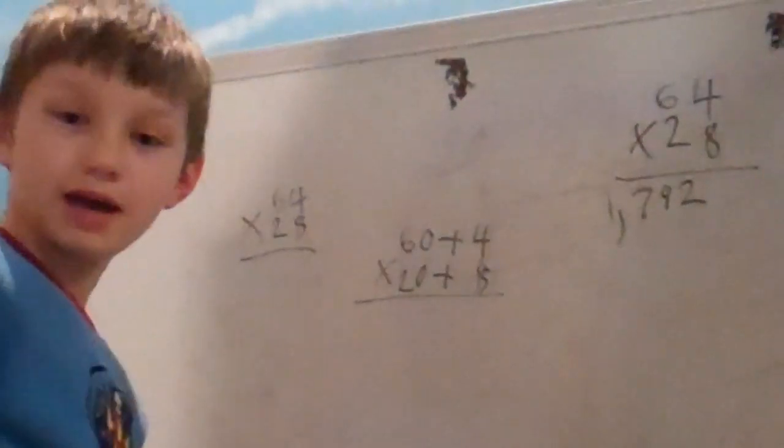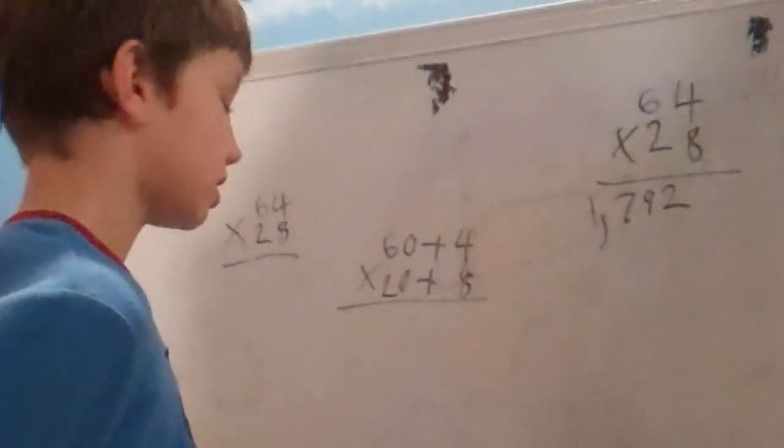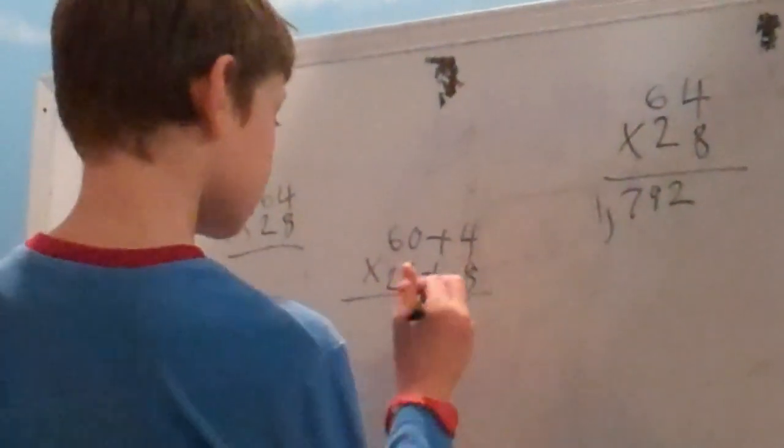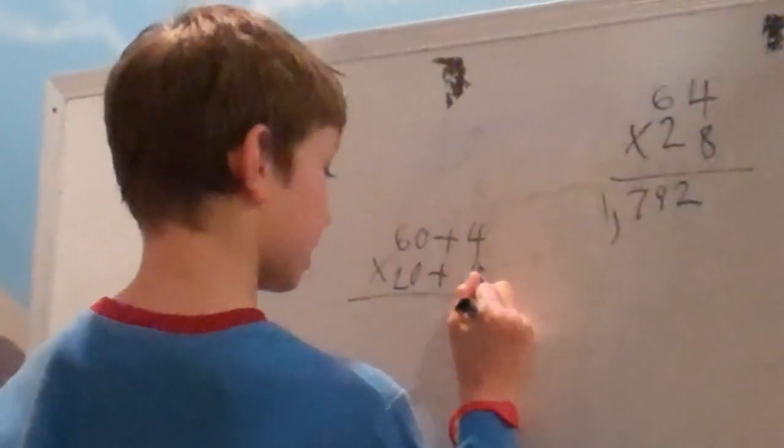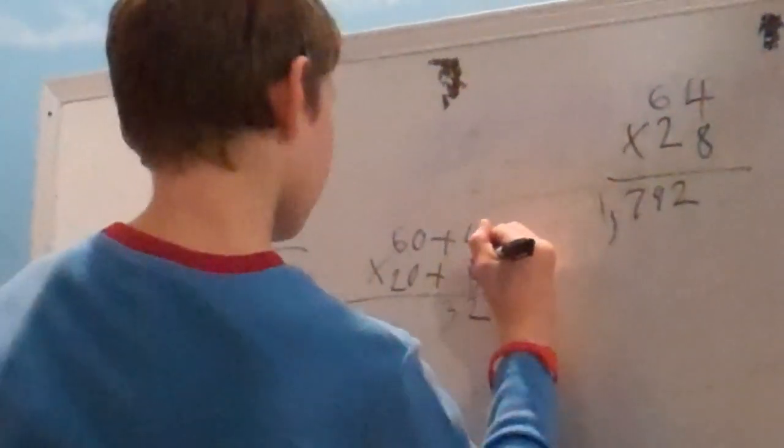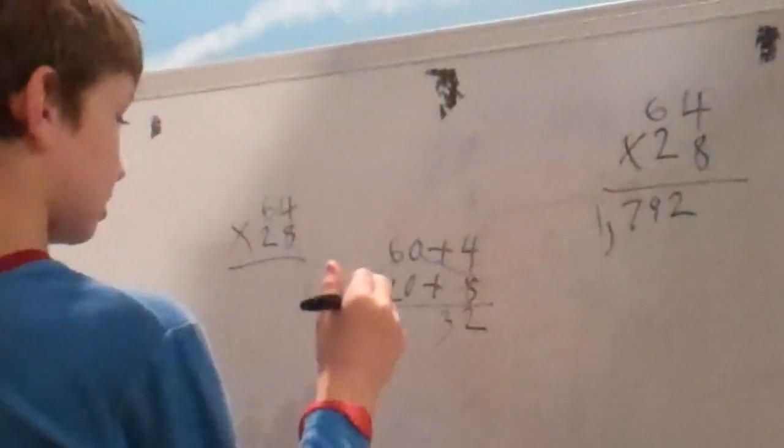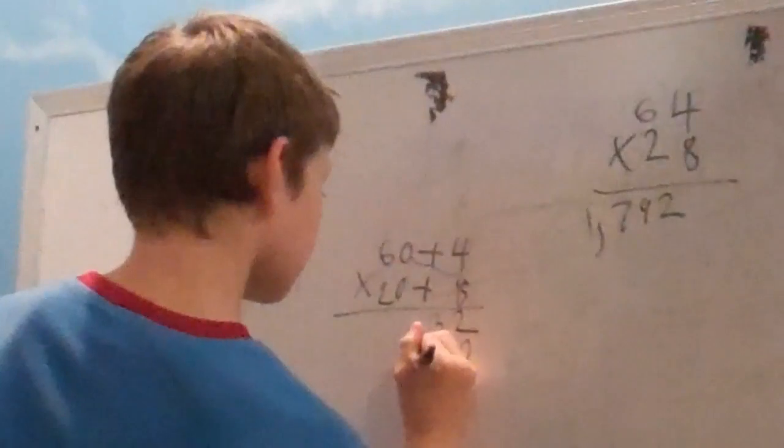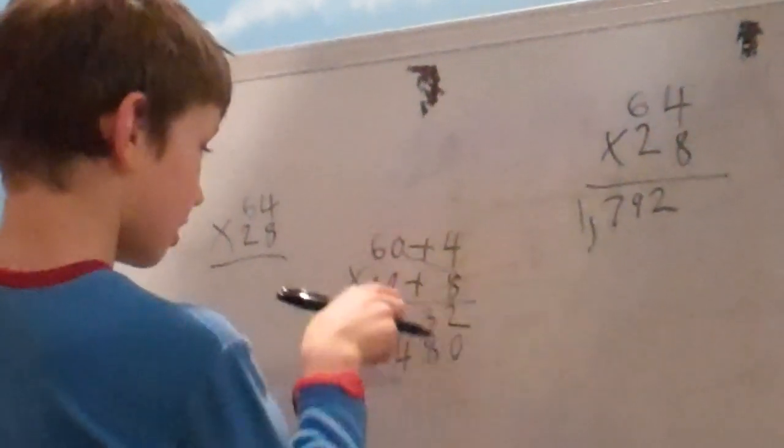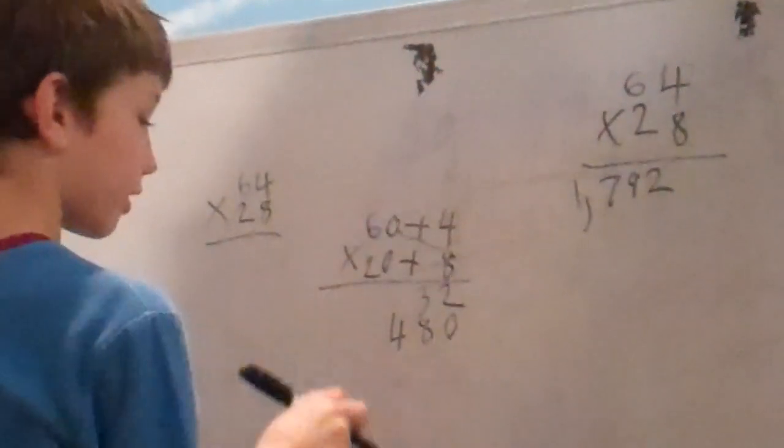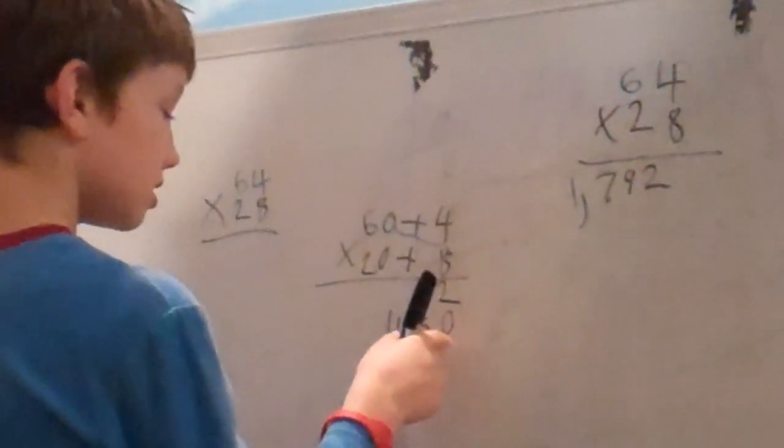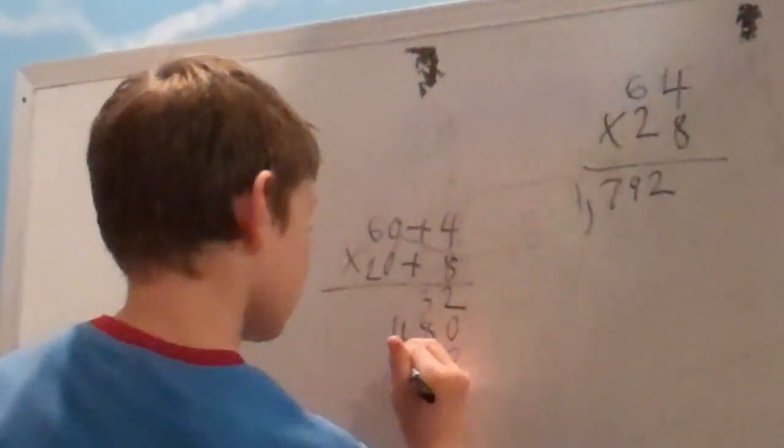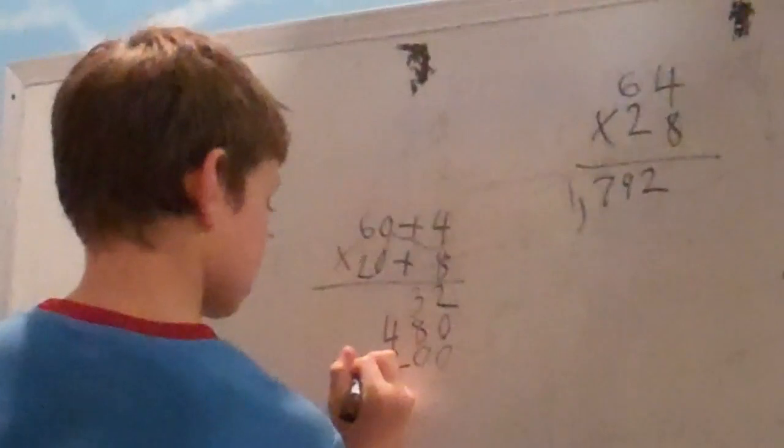Now, 8 times 4 is 32, so put the 32 right here. Now I'll go like this. Zero. I'm going to go ahead and put that zero right there. 8, 4. Because, zero, I'll go ahead and put the zero right here. 8 times 4 is 48, so 480. Now I'll go down. Two zeros. 1,200.